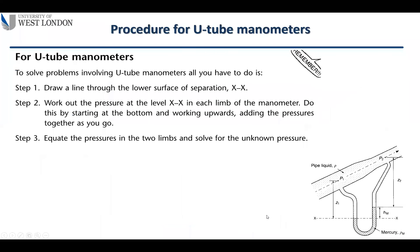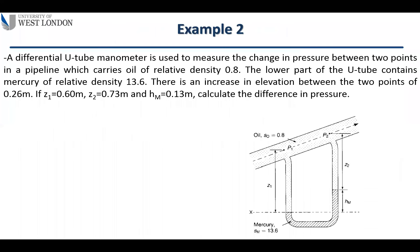To summarize the procedure: first, draw the XX line at the lower mercury surface. Second, calculate the pressure at the XX level for each limb by writing the pressure contributions from that connection point. Third, equate the pressures in the two limbs and solve for the unknown pressure.